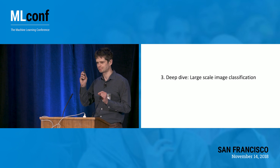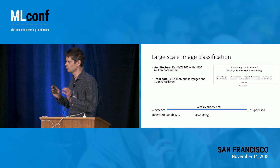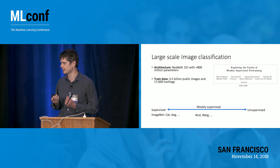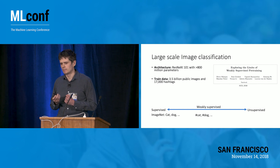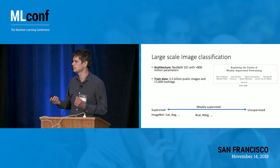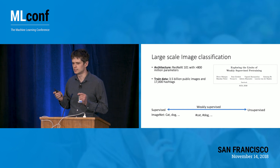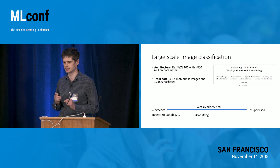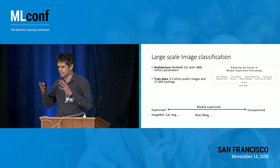I'll go deeper into large-scale image classification. There are several approaches: supervised, like ImageNet — the traditional approach — and unsupervised approaches that people have tried. Supervised approaches work a lot better, but they are costly. To get more data, we took data from Instagram — hashtags for public images — and generated a dataset of 3.5 billion images with 17,000 hashtag labels as a classification dictionary.